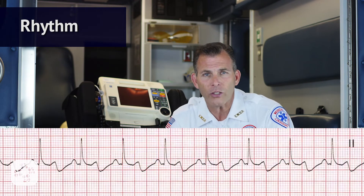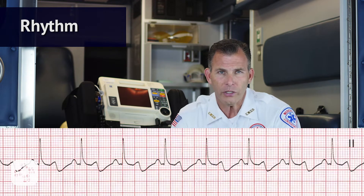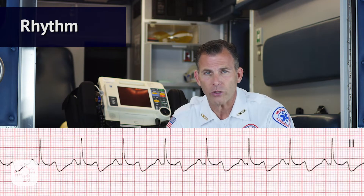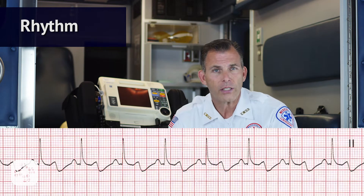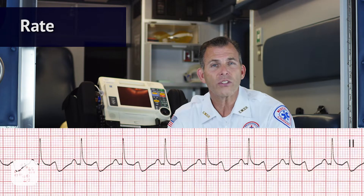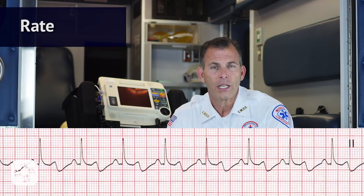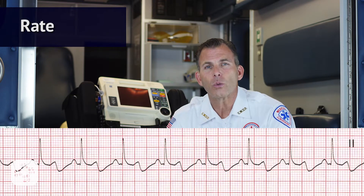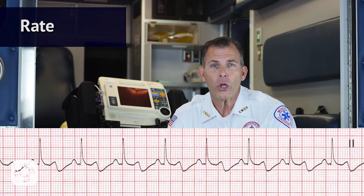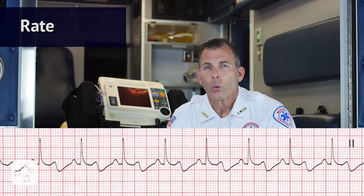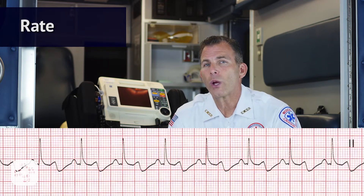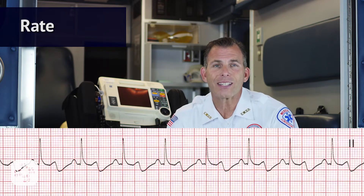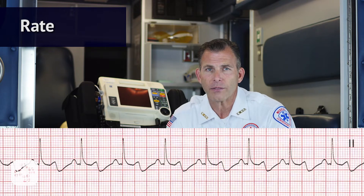To do so, we're going to start with the rhythm. Is the rhythm regular or irregular? In this case it's regular. Next we look at the rate. What is the rate? It's 80 beats per minute. Is the rate normal, fast, or slow? We know that the rate is normal because it falls between 60 and 100 beats per minute.